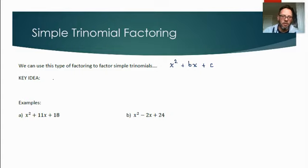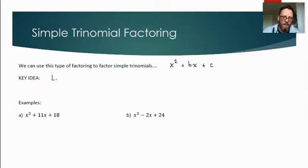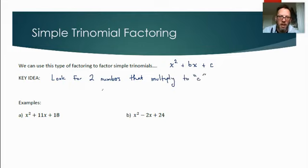The key idea to factor a simple trinomial is to look for two numbers that multiply to the constant term c, and also add to the middle term b.